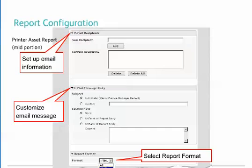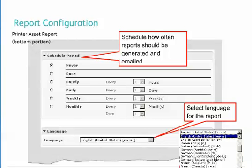As we continue to set up the printer asset report, there is an area to specify the email recipients. You may also customize the message body with a custom subject and a custom note at the front or back of the report. Reports are generally available in up to three different formats: CSV for database or spreadsheet use, HTML for immediate viewing, and XML. Centerware Web has the ability to define a scheduled period for reporting. All reports can be sent on a one-time, hourly, daily, weekly, or monthly basis as required. The language to be used for the report can also be specified here.